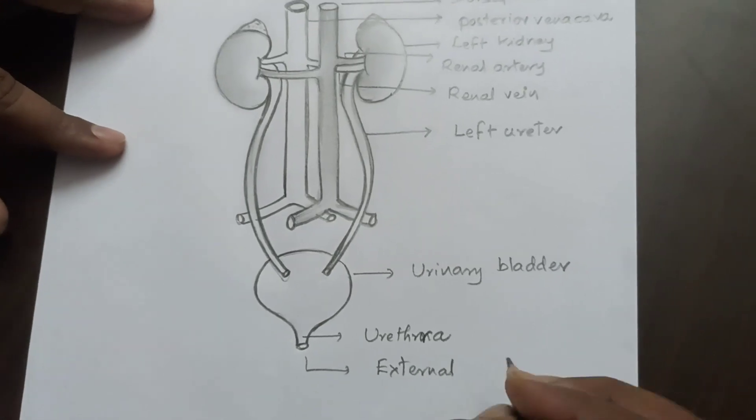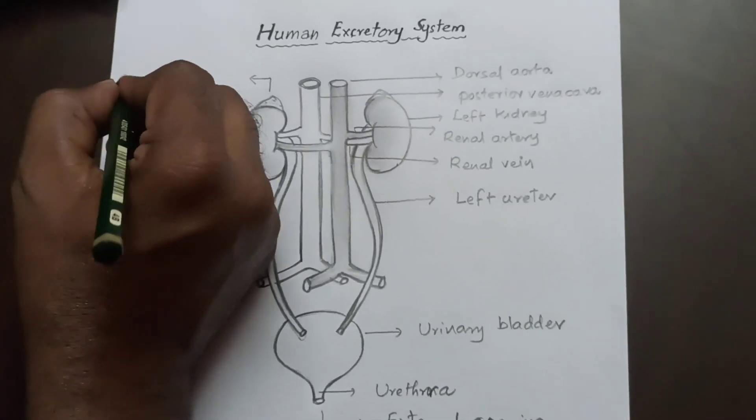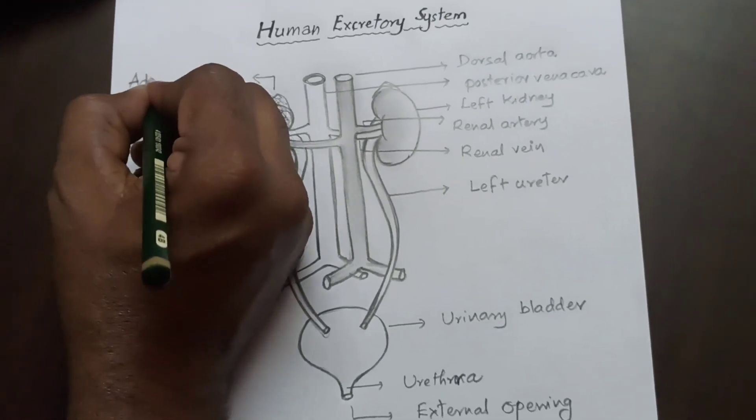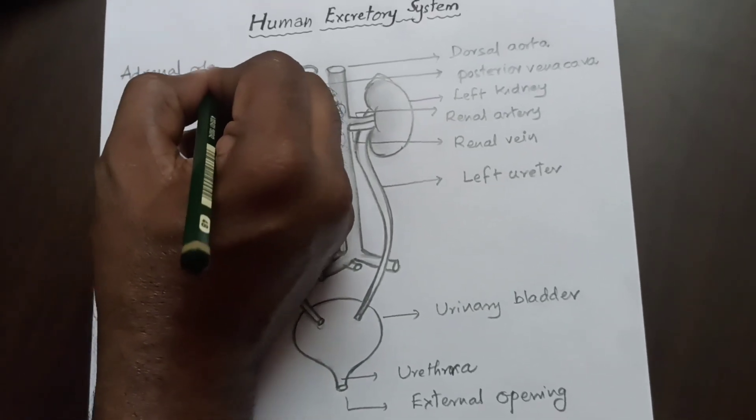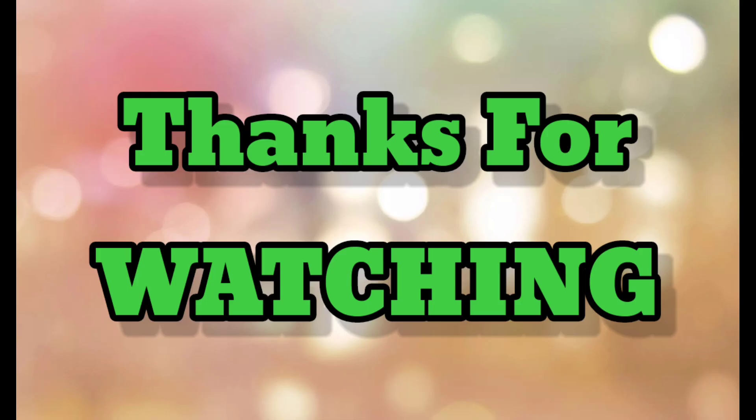This is the external opening of the urinary bladder. This is adrenal glands. Completed. Hope you have understood well.